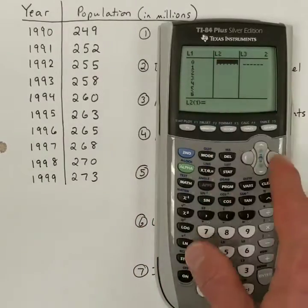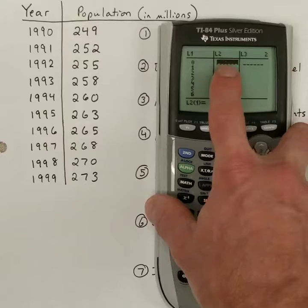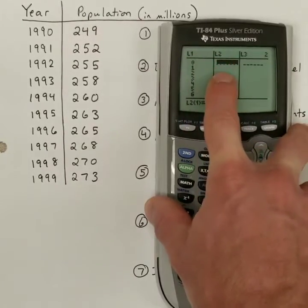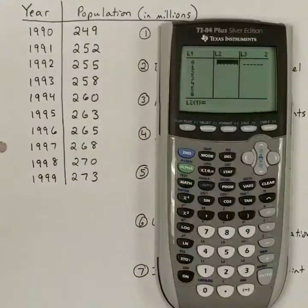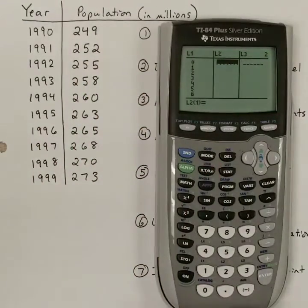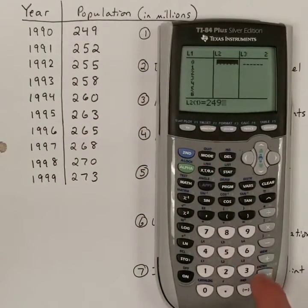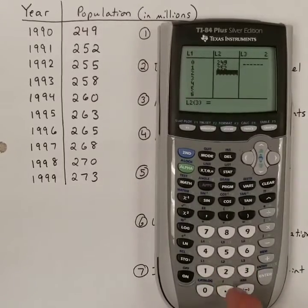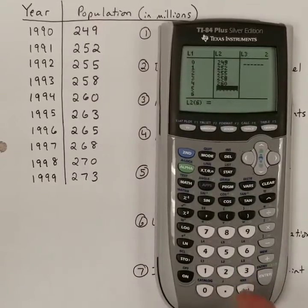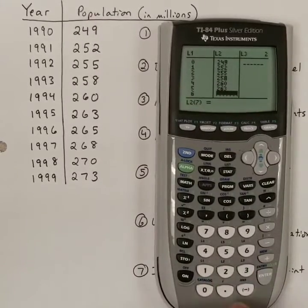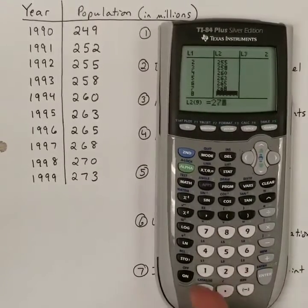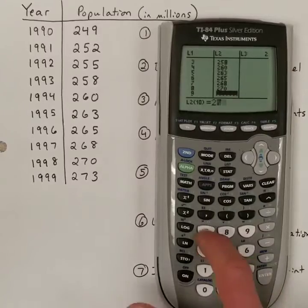Then in the second column, I hit the right arrow to move over to the second column. And in list 2, these L's are representing lists, so list 1, list 2. List 2, I type in my population. These I don't have much I can do with. They're in millions, so I've already trimmed off a bunch of zeros. So I have 249, enter 252, enter 255, enter 258, enter 260, 263, 265, 268, 270, and 273.